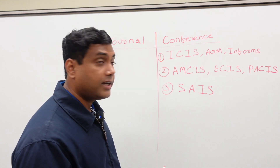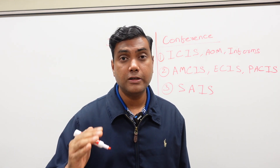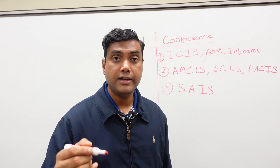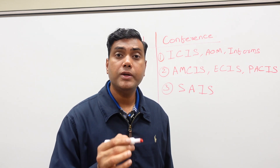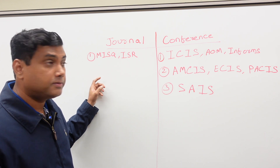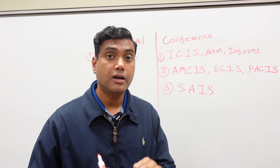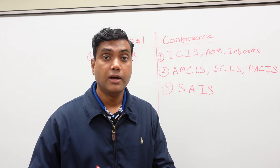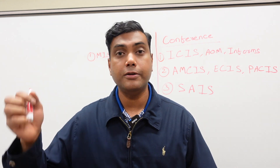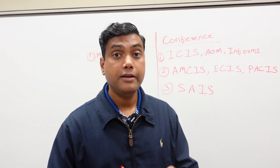In the case of journals, we have two undisputed top journals in information systems. The two best journals are Management Information Systems Quarterly, known as MISQ, and Information Systems Research, known as ISR. If you have a research paper published in MISQ or ISR, no university will dispute that you have done top-notch quality work — whether you are at Harvard, Stanford, Georgia State, Georgia Tech, UT Austin, or UT Arlington.